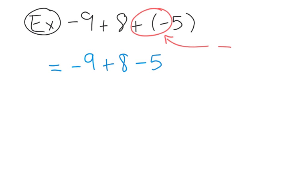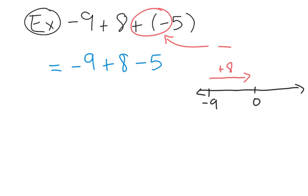You want to use a number line to help yourself solve this. Let's put zero over here — we actually start with negative nine. We're going to add eight to negative nine, and remember, when you're adding, you're going further to the right. When you add eight to negative nine, you end up at negative one. So negative nine plus eight equals negative one, and then the subtract five still stays the same.